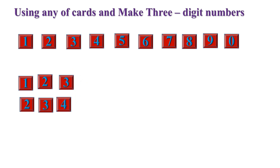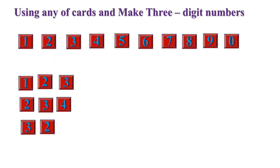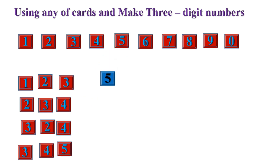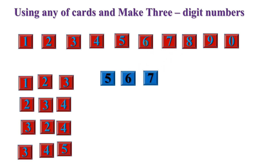The cards three, two, and four — the number is three hundred and twenty-four. Cards three, four, five — the number is three hundred and forty-five. Cards five, six, and seven — the number is five hundred and fifty-seven.